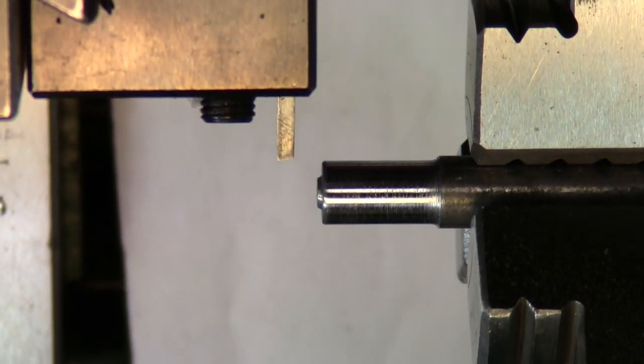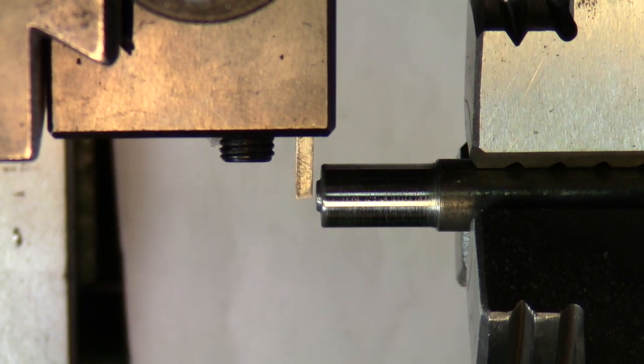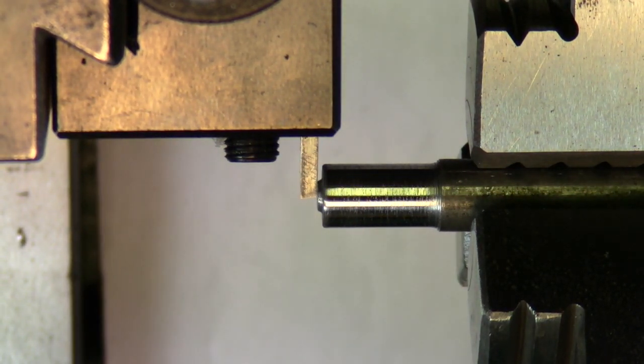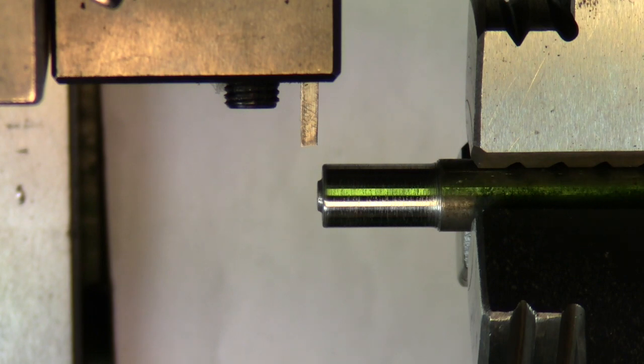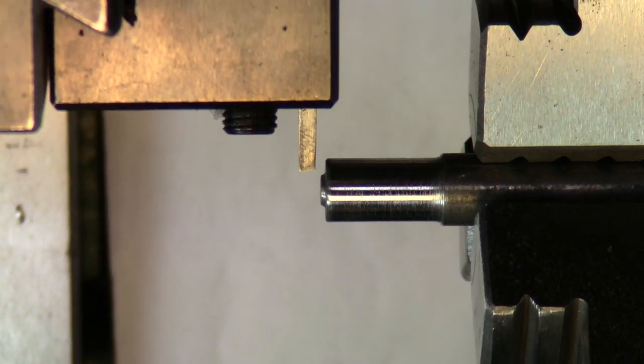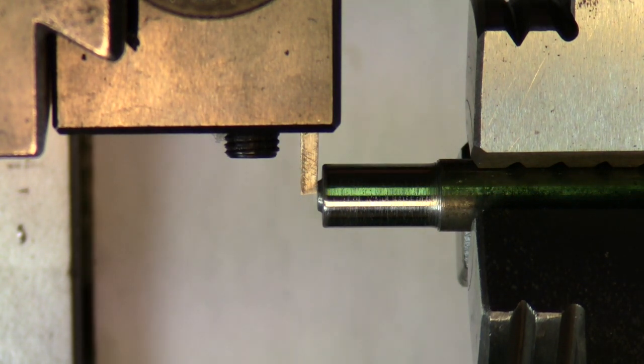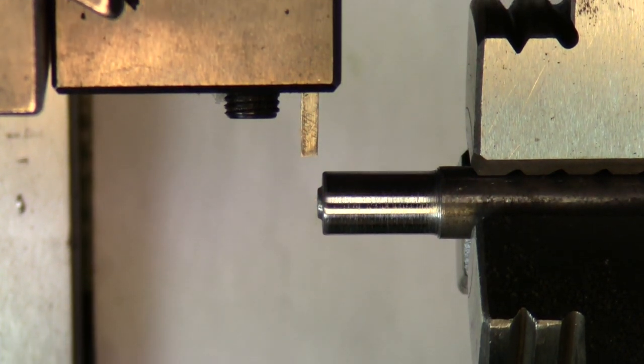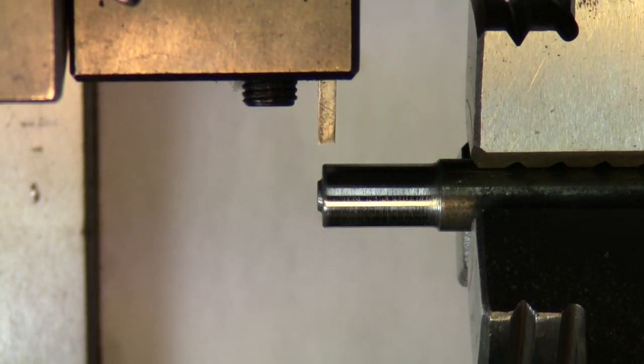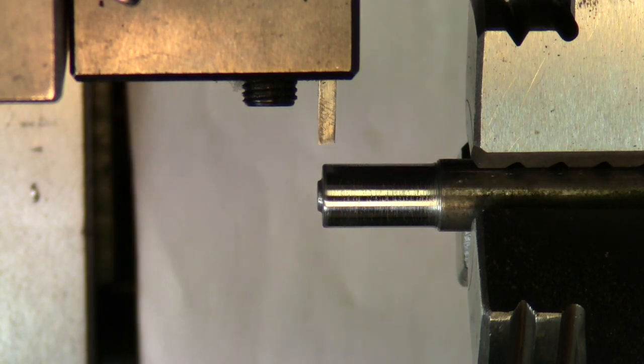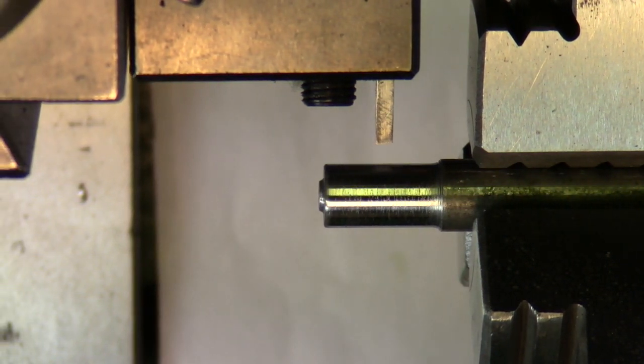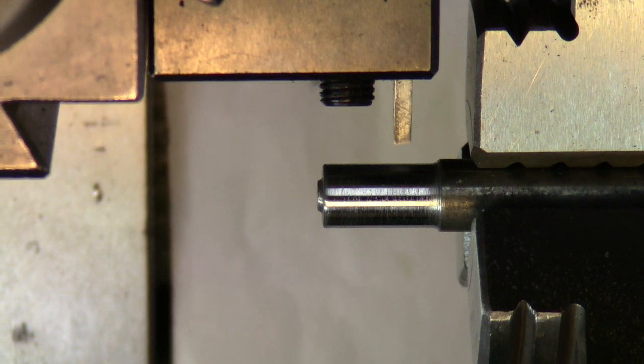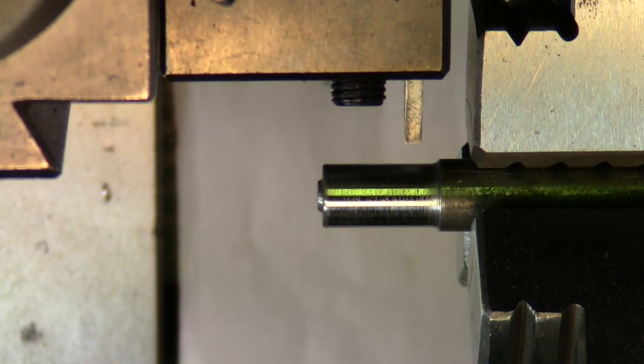Now we're going to cut it off. Come up here, bump my part, set my indicator to zero. Now I'm going to move it in the width of the blade which is 093. Make sure my indicator is set. Dial in the 093, reset my indicator to zero, and now I want to go in 460 plus or minus ten: 1, 2, 3, 4, 60. And I'll cut her off.